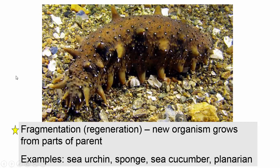Another type is regeneration, where a new organism grows from parts of a parent. This is different from, say, an iguana regrowing its tail — that is regeneration, but it doesn't create a new organism, so it's not considered asexual regeneration. Examples of organisms that do perform asexual regeneration include sea urchins, sponges, sea cucumbers, and planarians, a type of flatworm.